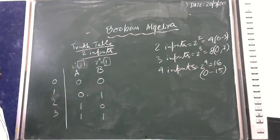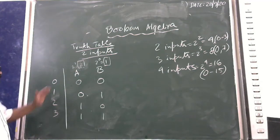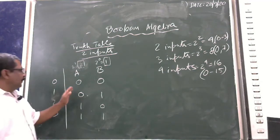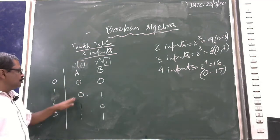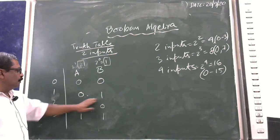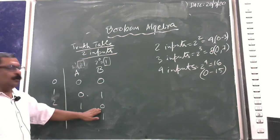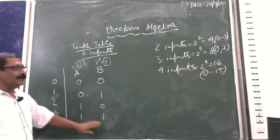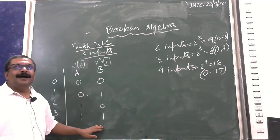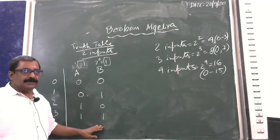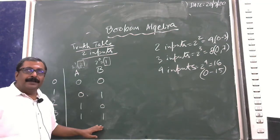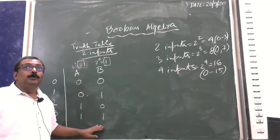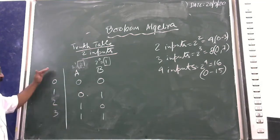So the combinations for the truth table of two inputs are: 0 0, 0 1, 1 0, 1 1. Once you understand the logic of how they are derived, you can write them directly.